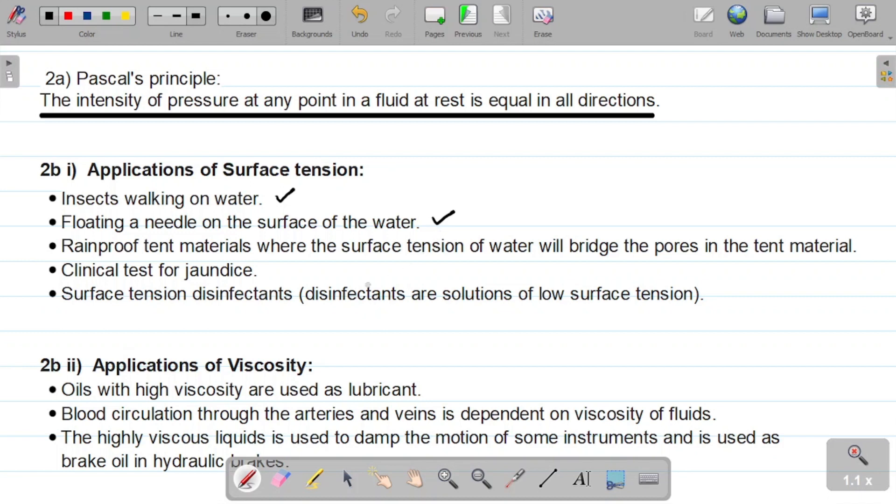The third one is that rainproof tent materials and also umbrellas, rainproof tent materials where the surface tension of water will bridge the pores in the tent materials. So we use surface tension in making tent materials and also things like umbrellas, raincoats, etc. That's another application of surface tension.